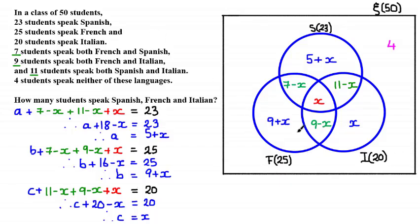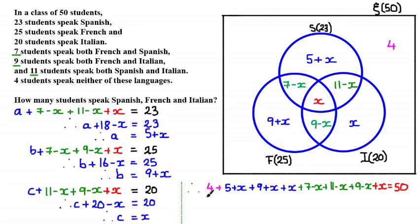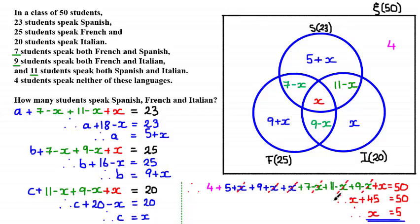Now we've illustrated every region algebraically. Using the fact that the sum of all elements in the universal set equals 50: 4 plus 5 plus X plus 9 plus X plus X plus 7 minus X plus 11 minus X plus 9 minus X plus X equals 50. Cancelling out the X terms gives X plus 45 equals 50, so X equals 5 — the number of students that speak Spanish, French, and Italian.